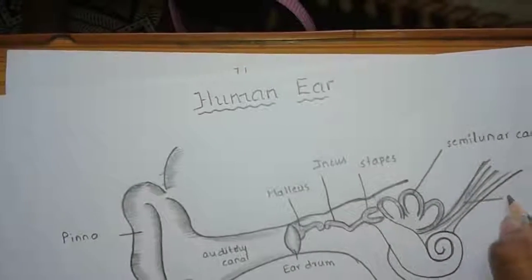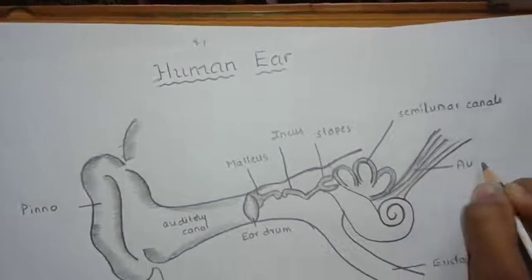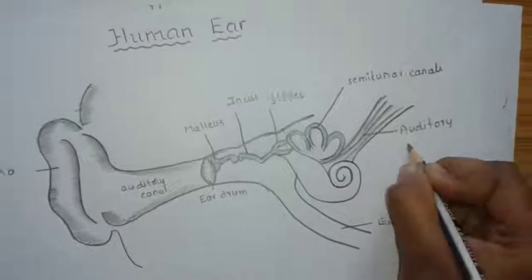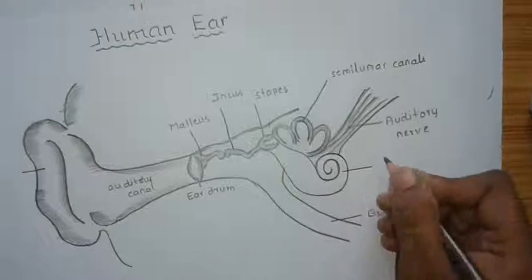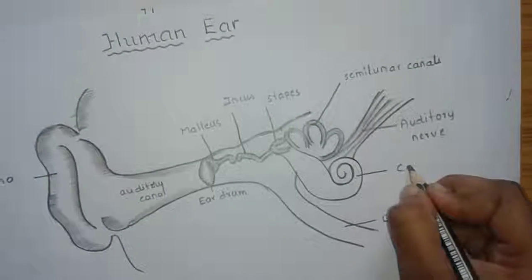Then this is the auditory nerve and this is the lower part of the inner ear, that is cochlea.